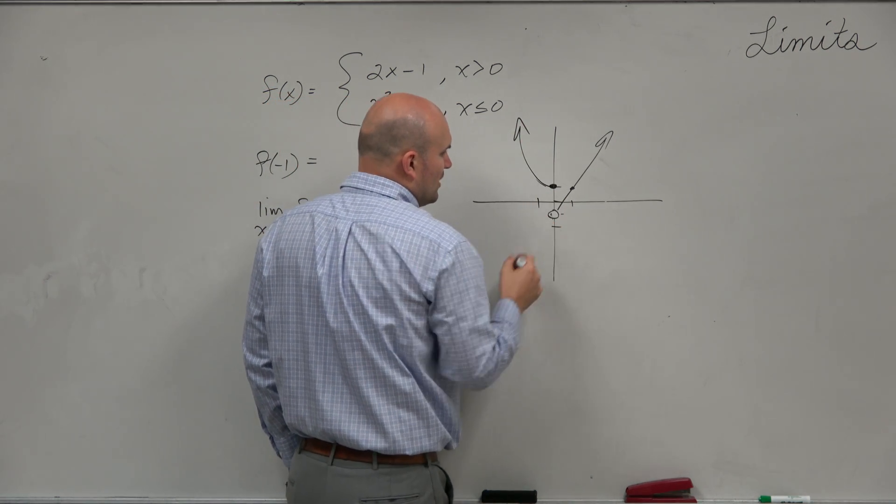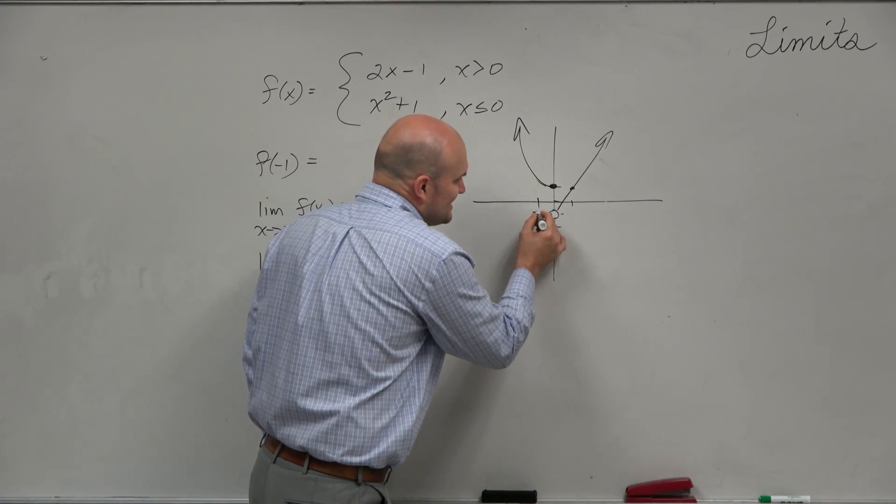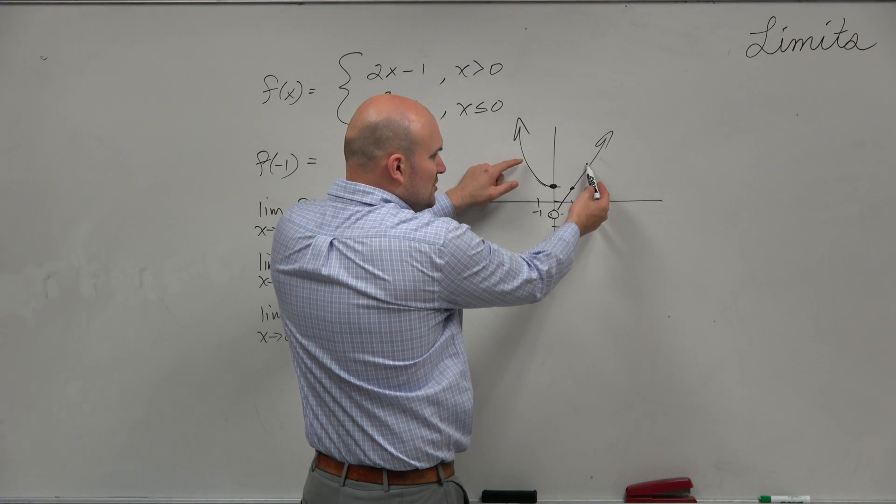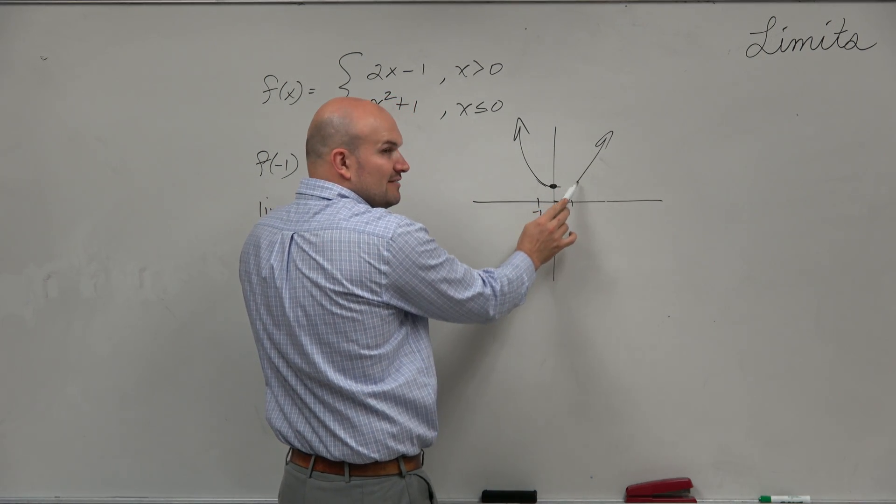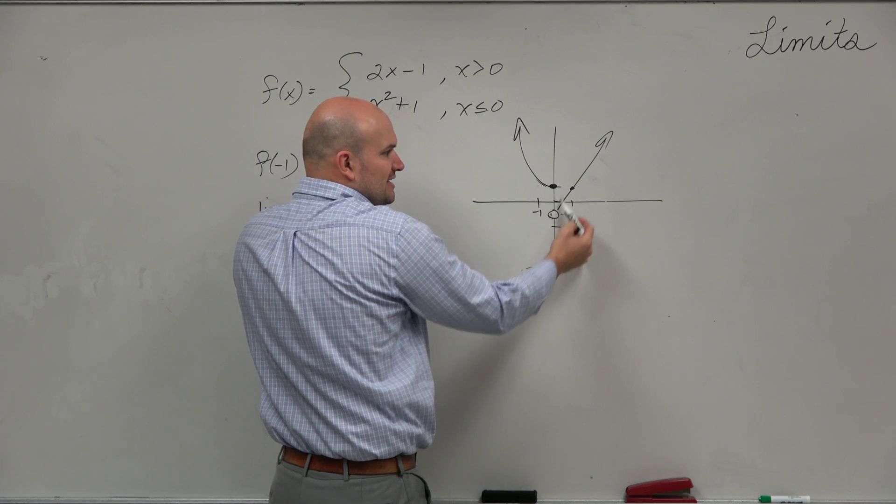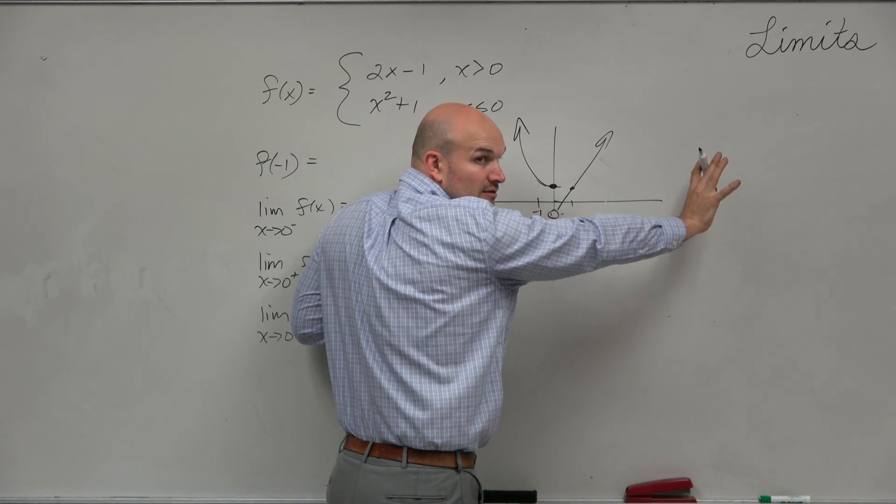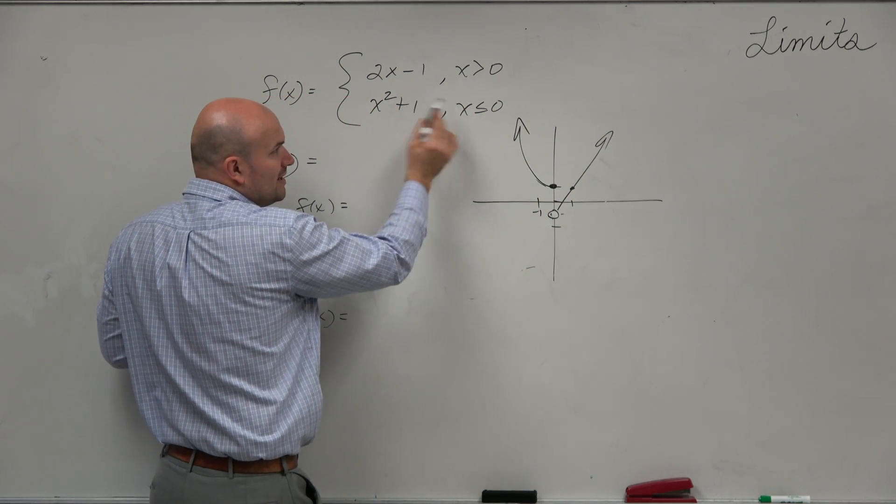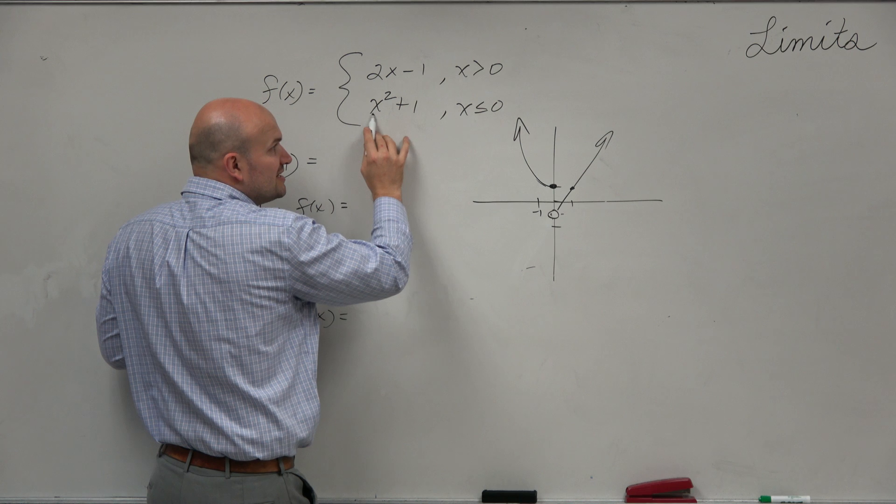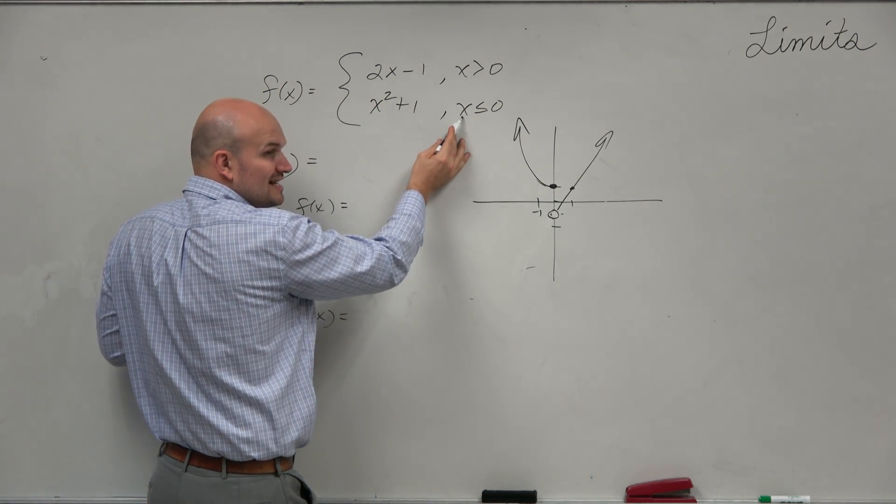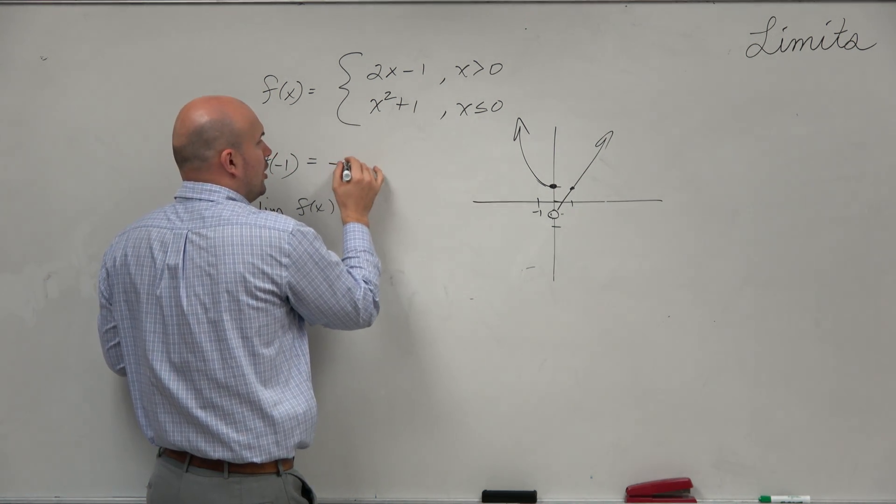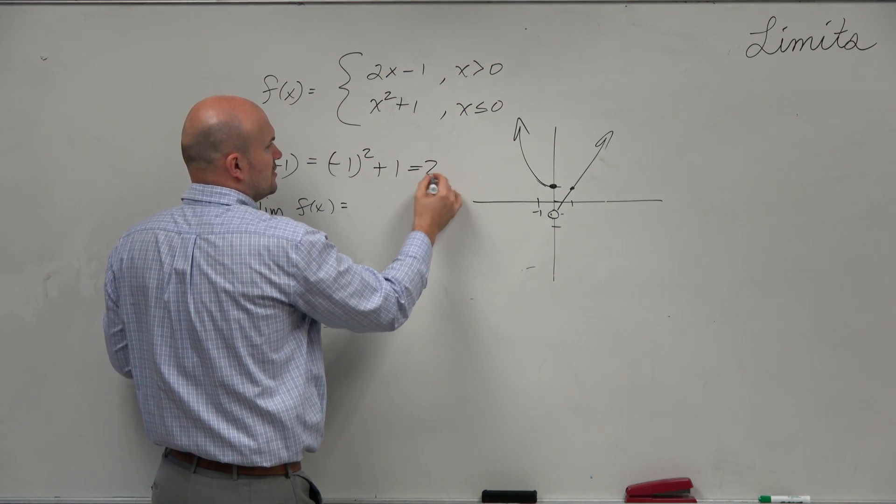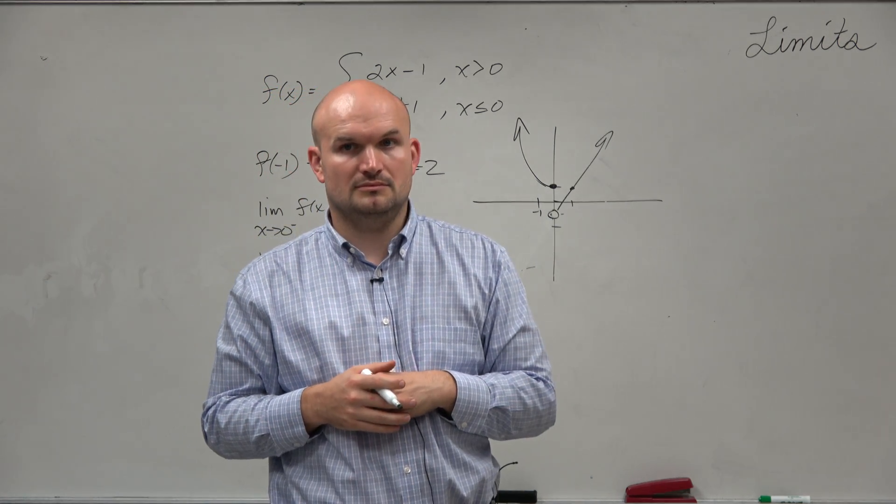So again, what we're looking for is what is the value of the function at -1? And if you plug in -1 into both equations, it makes no sense to plug it in over here. Why would you plug -1 into that function? This function is only defined for positive values, right? So it makes no sense to plug -1 into the top equation. We only want to plug -1 into this equation because this is the equation for all values of x that are less than or equal to 0. So all you had to do is plug it into this equation. (-1)² is 1 plus 1 is 2.